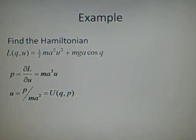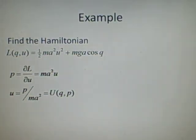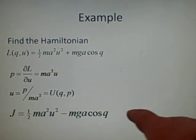Now u times p is just ma²u². So if we subtract ½ of ma²u², then we'll be left with ½ma²u² - mga cos q. And that's your Jacobian.